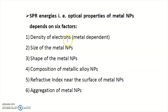Number one is density of electrons, which we have already seen in our last formula for omega p — the density of electrons basically changes. So it is metal dependent. Even if you take gold and silver of identical shape and size, you still get different colors.